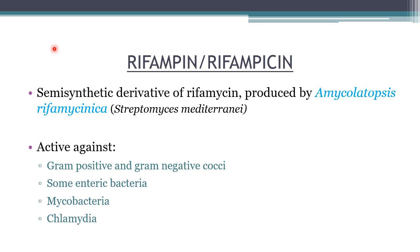The first drug for today's discussion is rifampin, also known as rifampicin. It is a semi-synthetic derivative of rifamycin, produced by the bacteria Amicolatopsis rifamycinica, previously known as Streptomyces mediterini. Apart from affecting mycobacteria, it is also active against gram-positive and gram-negative cocci, including staphylococci, meningococci, and enteric bacteria, as well as chlamydia.